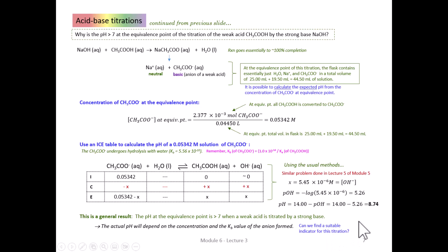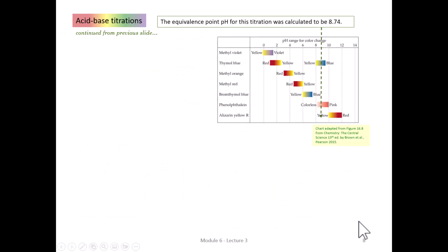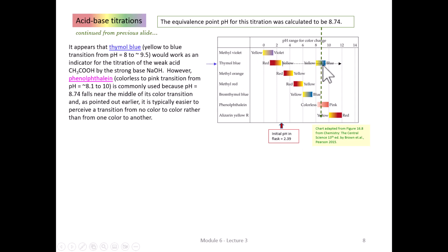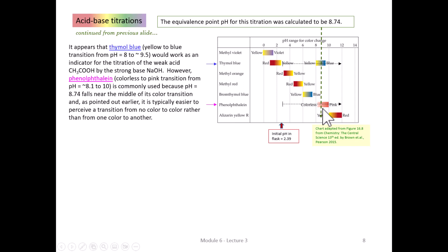What indicator should we use for this titration? Using the same indicator chart, with an initial pH of about 2.39 and an equivalence point at pH 8.74, thymol blue would work since 8.74 is in the middle of its color transition. But phenolphthalein would again probably be our choice — it's easier to detect a colorless-to-pink transition than one color changing to another, and for this weak acid–strong base titration, phenolphthalein's transition range is right at about the correct spot.